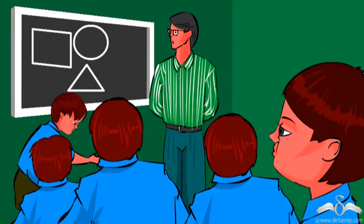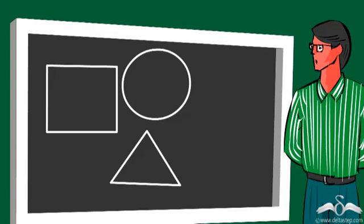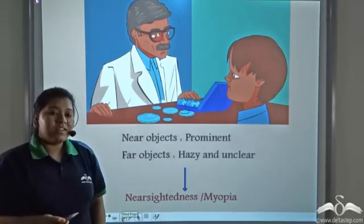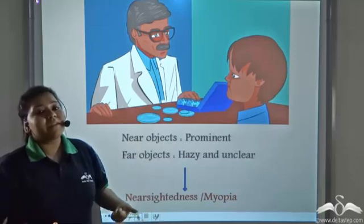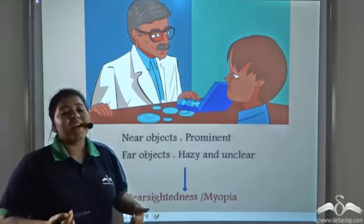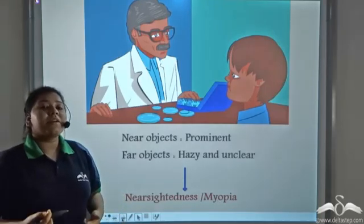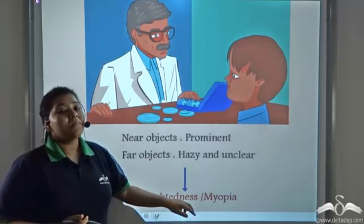So Peter asked for permission to sit on the front bench, and from there he could see everything written and drawn on the board clearly. So he went to the doctor. He told the doctor that near objects seem prominent but far objects seem hazy and unclear. The doctor told him that he was suffering from a condition known as nearsightedness or myopia.